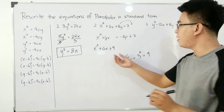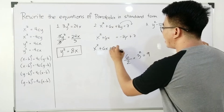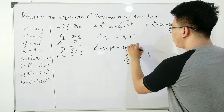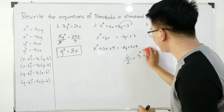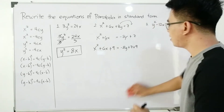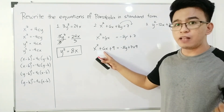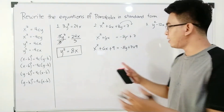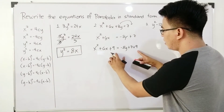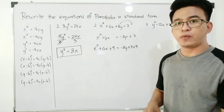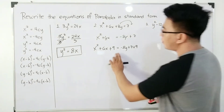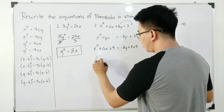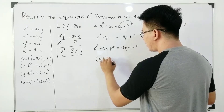But we also need to add 9 to the other side to keep the equation balanced. So we have -8y + 7 + 9. This one is already a perfect square trinomial. So what you will do is express this as a square of a binomial. The factors are (x + 3)². To get x + 3: get the square root of x², which is x; get the square root of 9, which is 3; and copy the sign of the middle term.